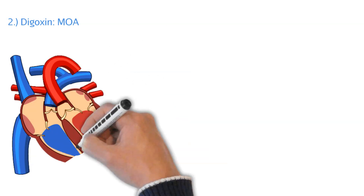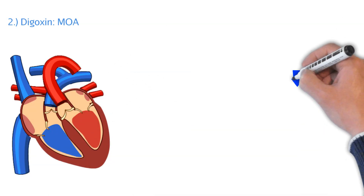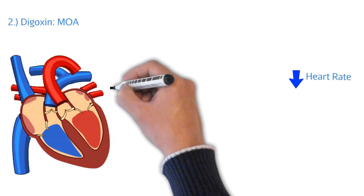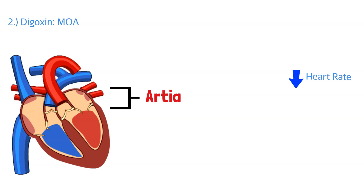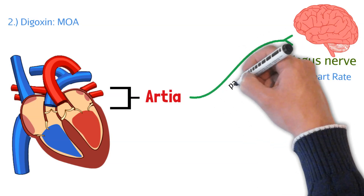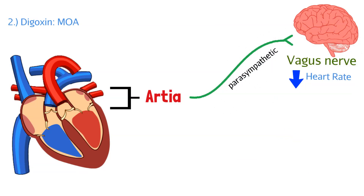Digoxin works on the heart in two key ways. The first is it can decrease heart rate by affecting the atria — the top portion of the heart. It does this by activating your vagus nerve through the parasympathetic tone, which is your rest-and-digest neural pathway. Digoxin activates this parasympathetic tone by allowing acetylcholine to release in your SA and AV node in the heart to slow down contraction.